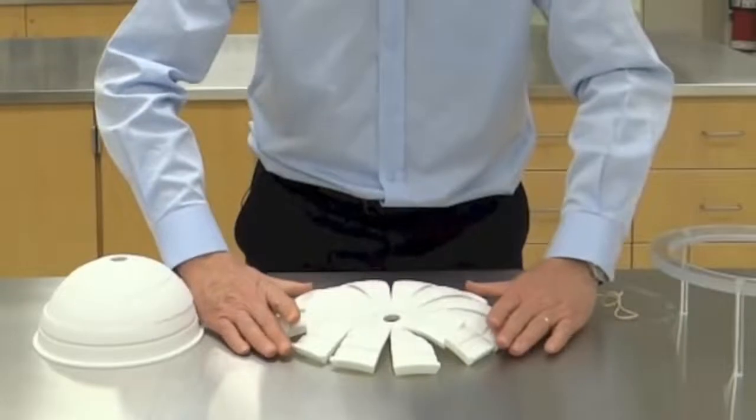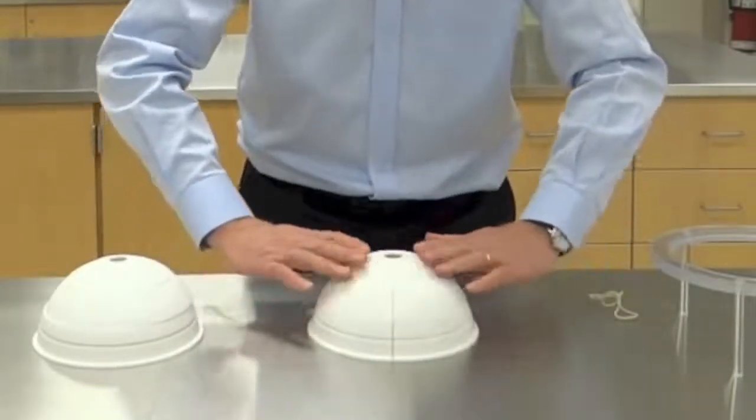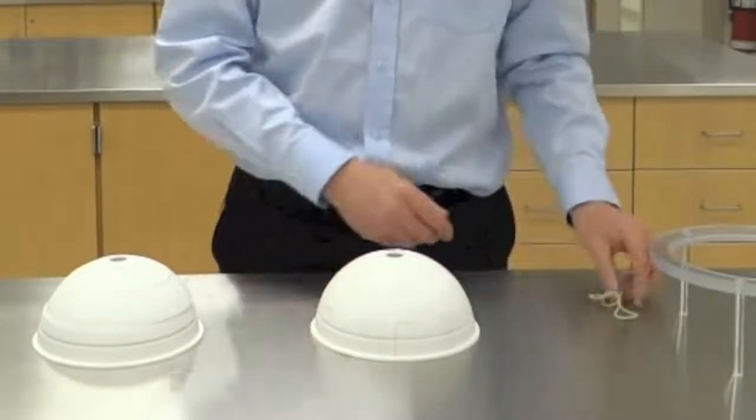So you can see the importance of a springing line here because then it redirects the forces upwards and inwards and causes this to be a stable structure.